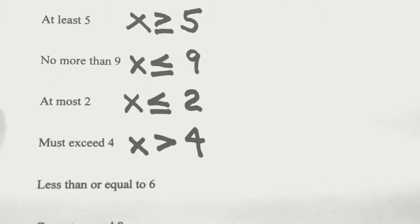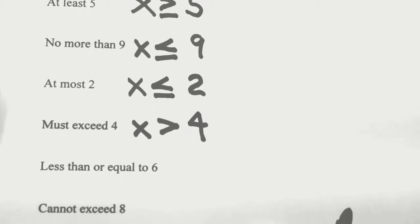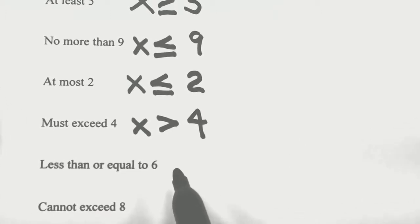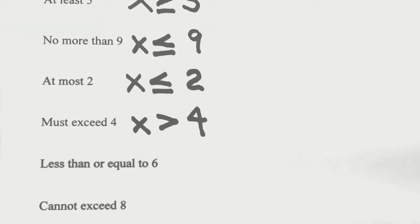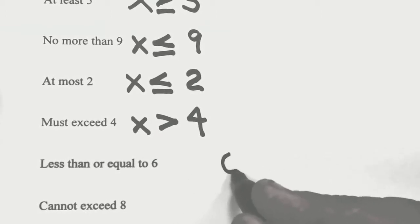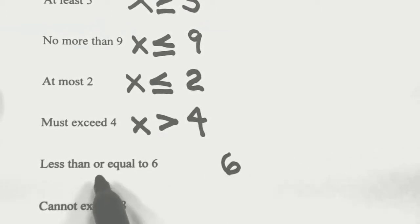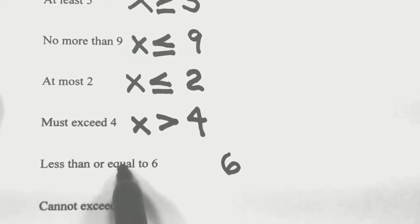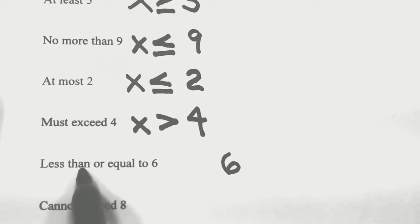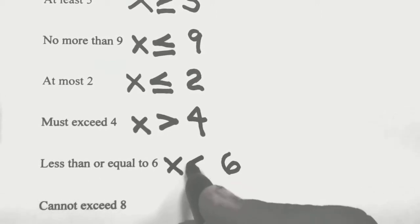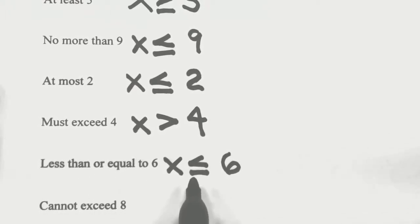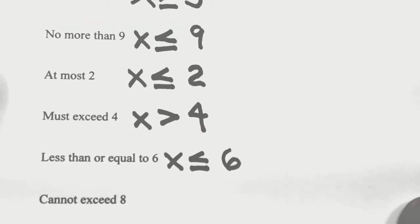If you get a phrase phrased just like one of the inequalities, that's great. For example, less than or equal to 6: we're referring to 6. Can we be more? No. Can we be equal? Yes. Can we be smaller? Yes. So x is less than or equal to 6. Very seldom will the phrase come out exactly in the name of the inequality, but when you get lucky, that's great.